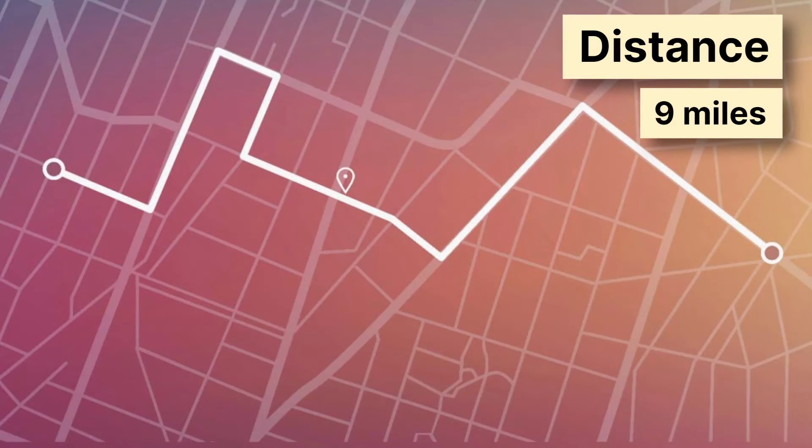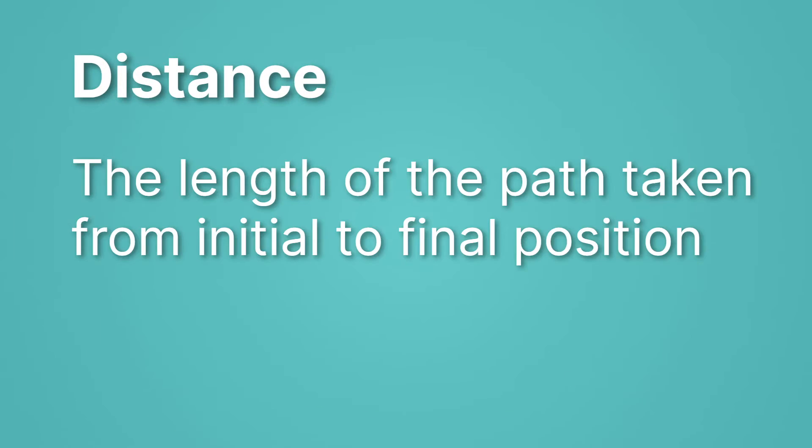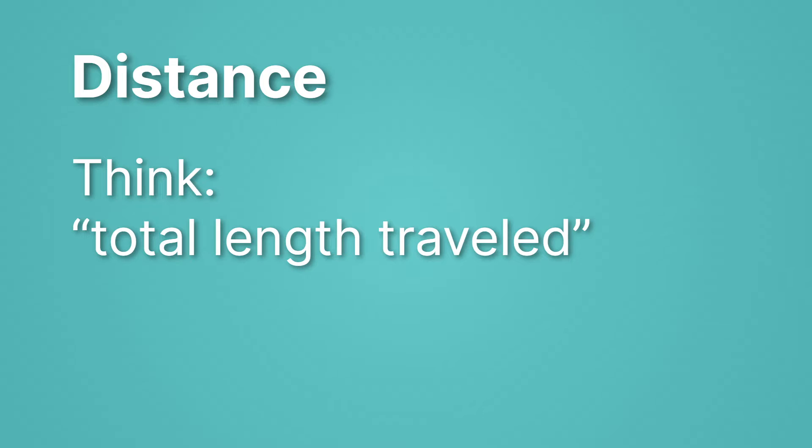First up let's think about distance. Distance is a pretty straightforward idea. Here you've gone along a white path from one point to another and it was nine miles. So distance is just the length of the path taken from your initial to your final position. Distance is always the total length traveled.